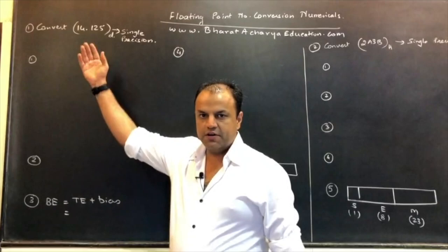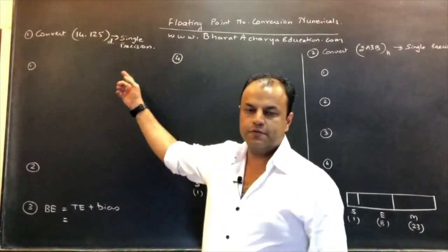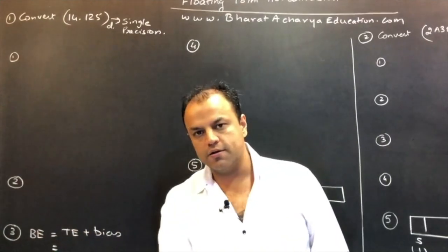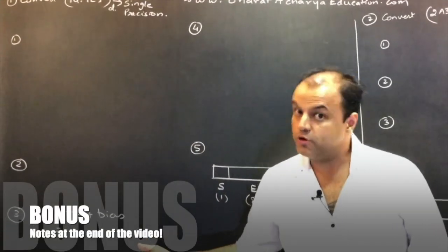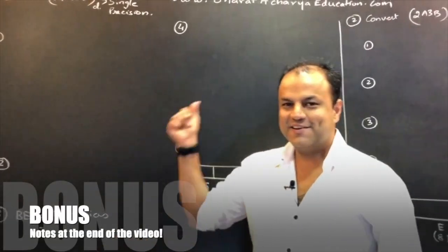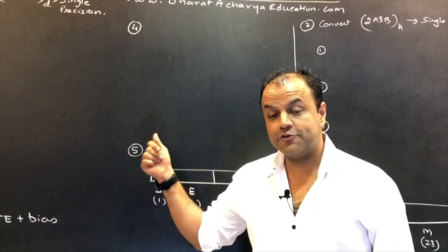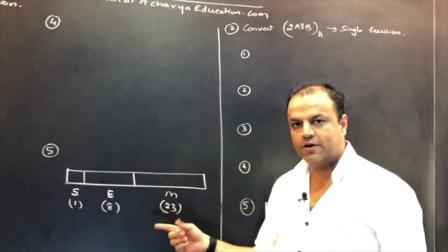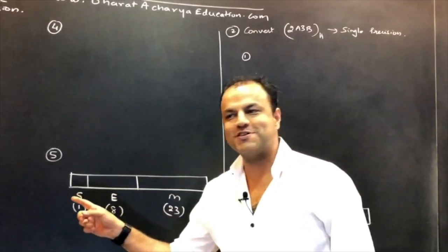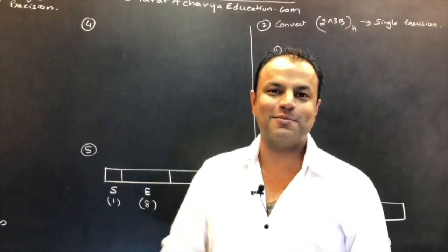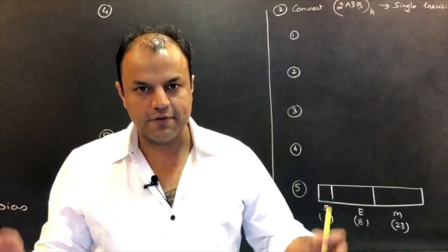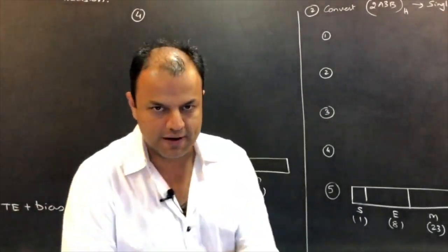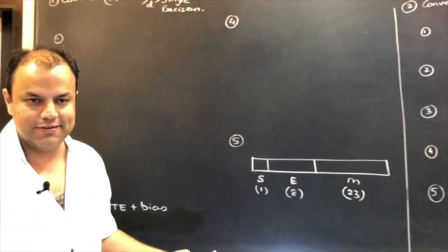Listen to the steps properly. First step: convert the number into binary. Second step: normalize the number. Third step: calculate the biased exponent. You know exponents have to be biased. Fourth step: convert the biased exponent into binary. Fifth step: substitute in the required format. Draw the whole format — don't just show a series of zeros and ones and tell the examiner to figure it out. Show it in the format. Make it easier for the examiner to correct; that automatically helps you get full marks.